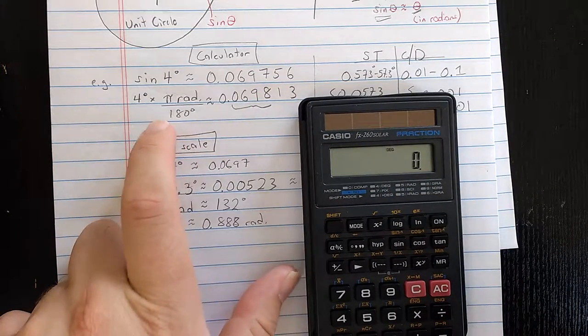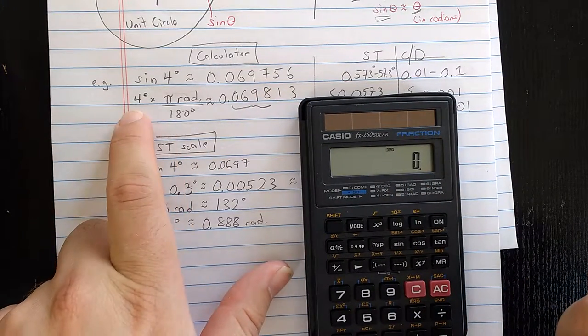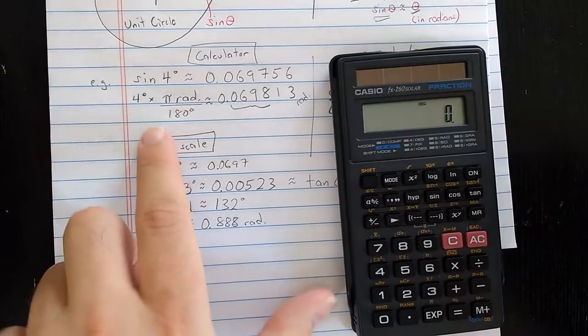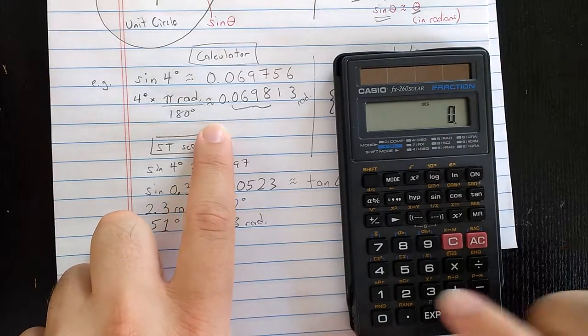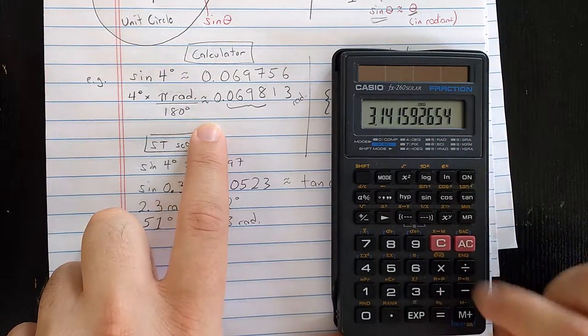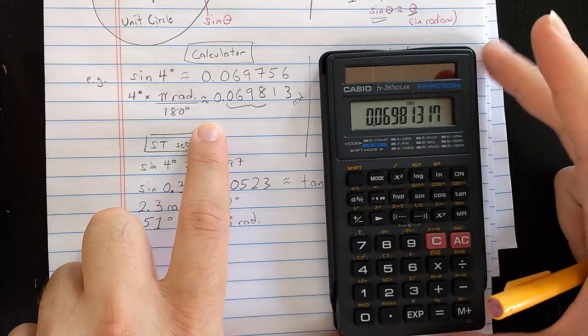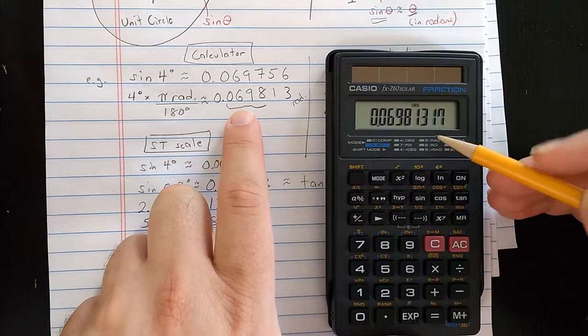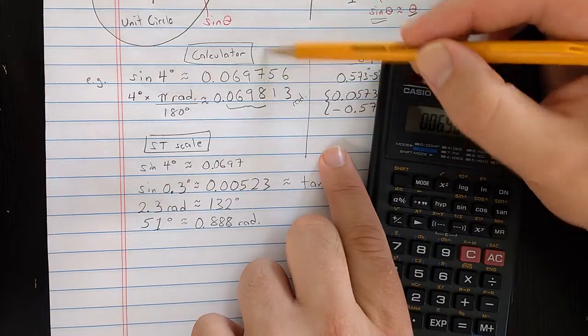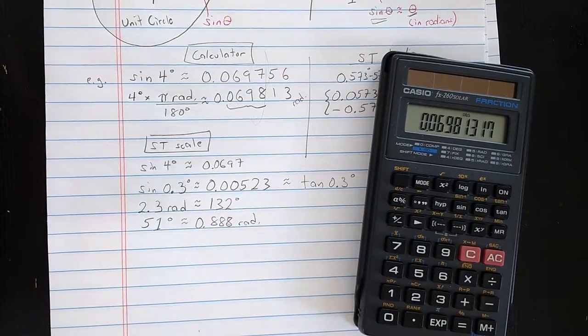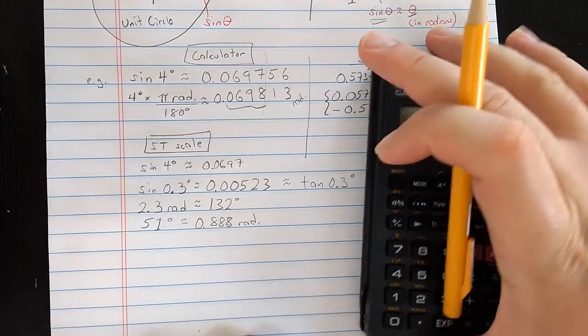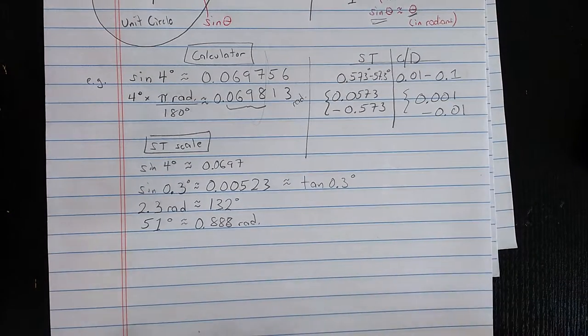Let's just do a conversion of four degrees into radians. So this should be radian. Converting four degrees into radians using this conversion factor. So four times pi divided by 180, 0.06981, and so on. You can see, very close. So the sine of the angle is approximated by the radian measure of the angle for these small angles.